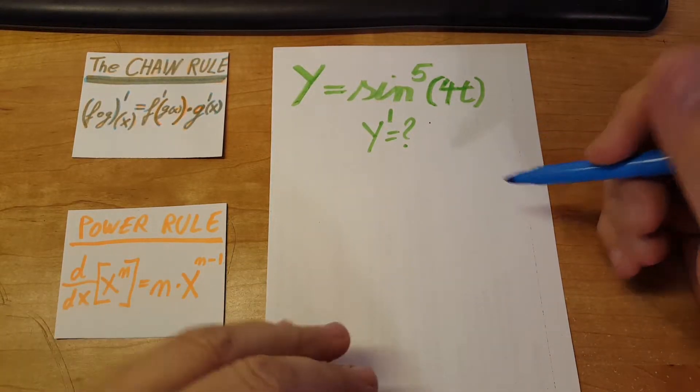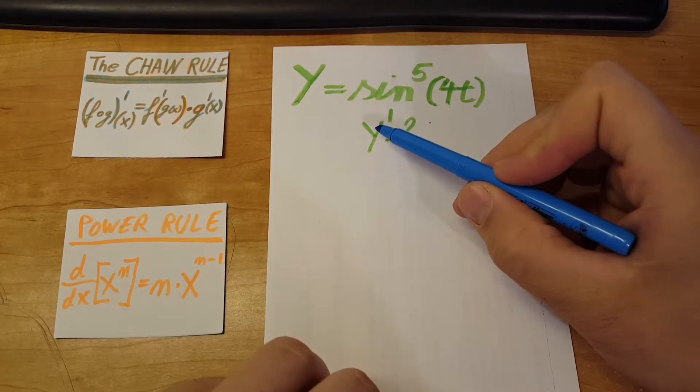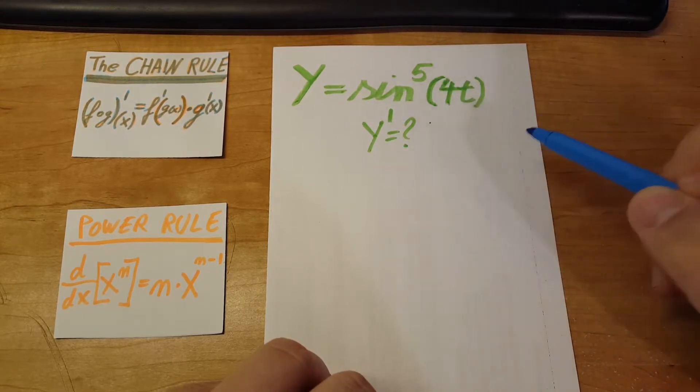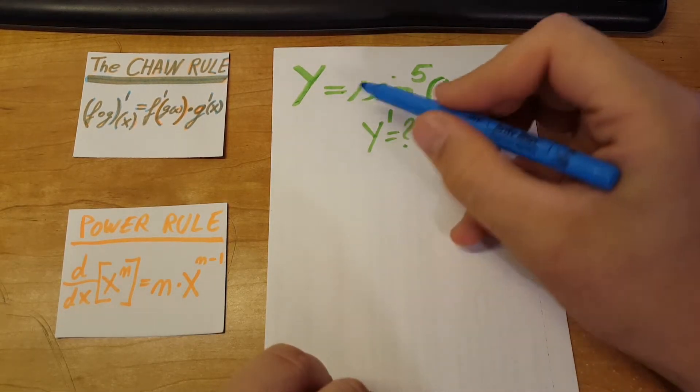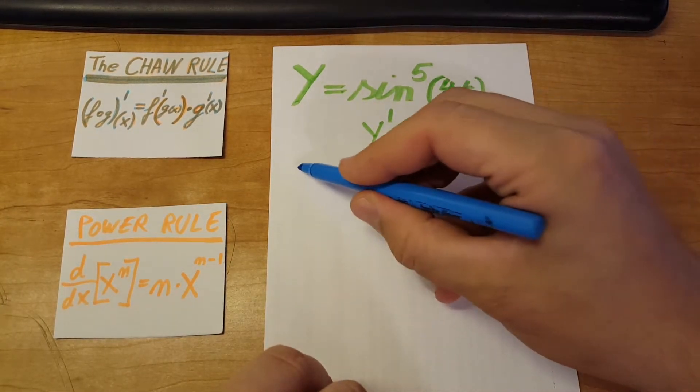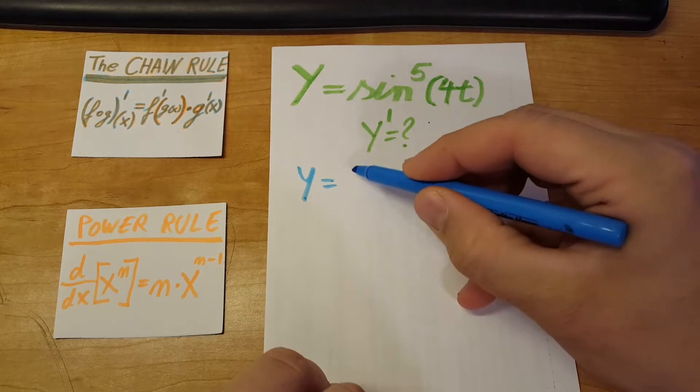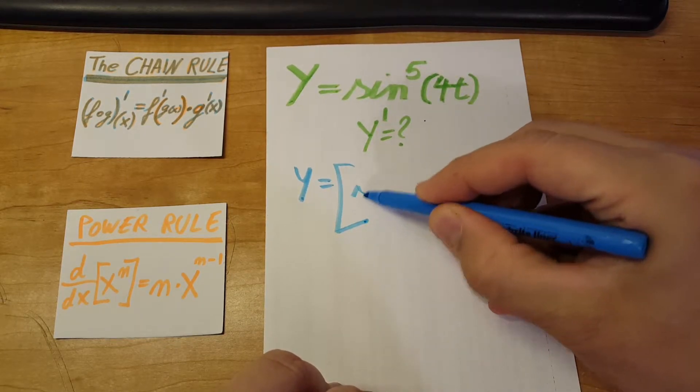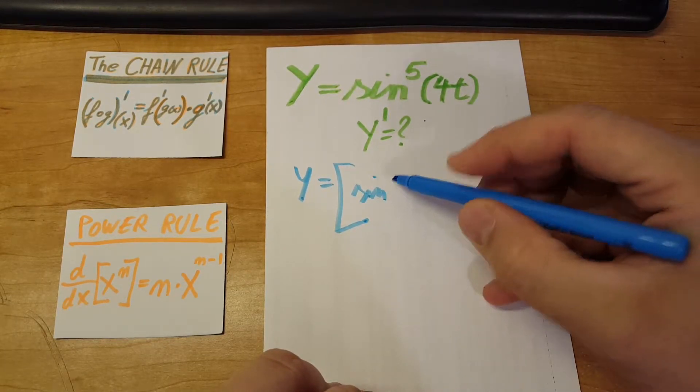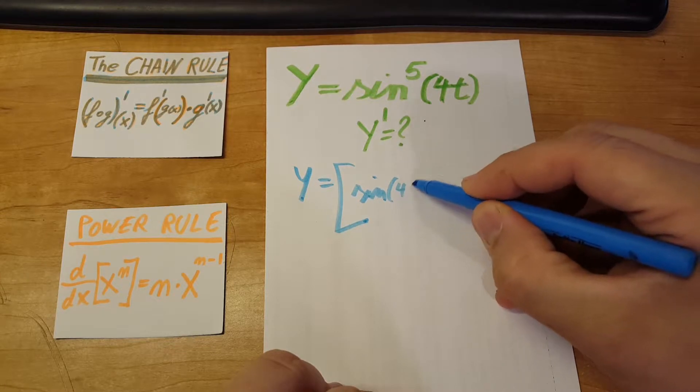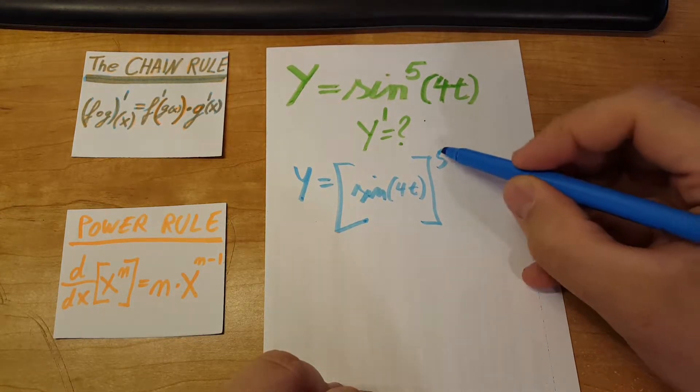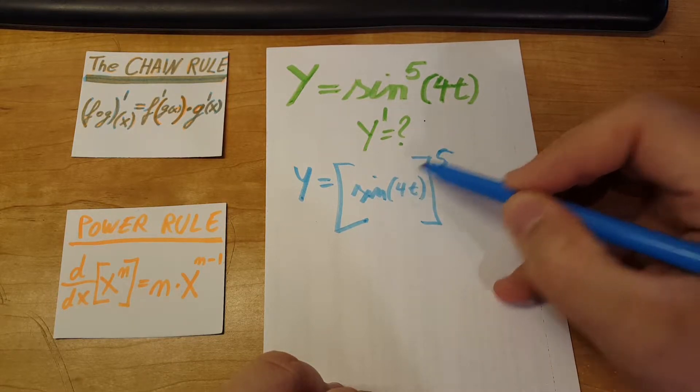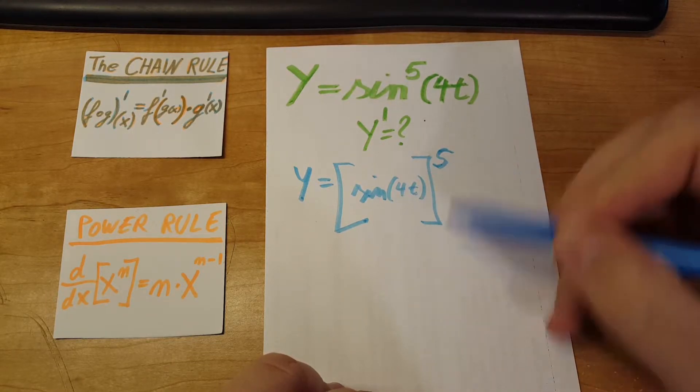Alright, we're gonna take a derivative of sine of 4t to the 5th power. So let's do it. First, we're gonna rewrite it a little bit. We're gonna put this whole thing, sine of 4t, to the fifth. All we did, we moved the fifth power from here to here.